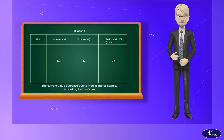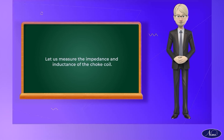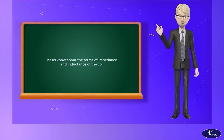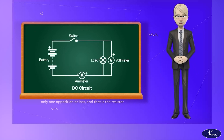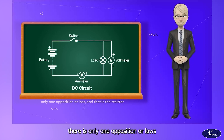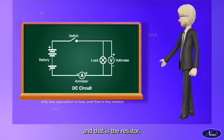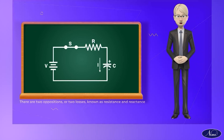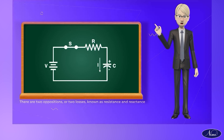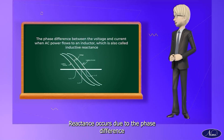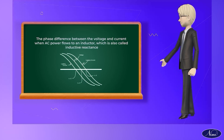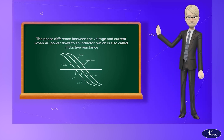Verify the calculated values from the given tabulation. Let us now measure the impedance and inductance of the choke coil. In a DC circuit, there is only one opposition and that is resistance, so we use the formula I = V / R. But in AC circuits, there are two oppositions known as resistance and reactance. Reactance occurs due to the phase difference between the voltage and current when AC power flows to an inductor, which is also called inductive reactance.